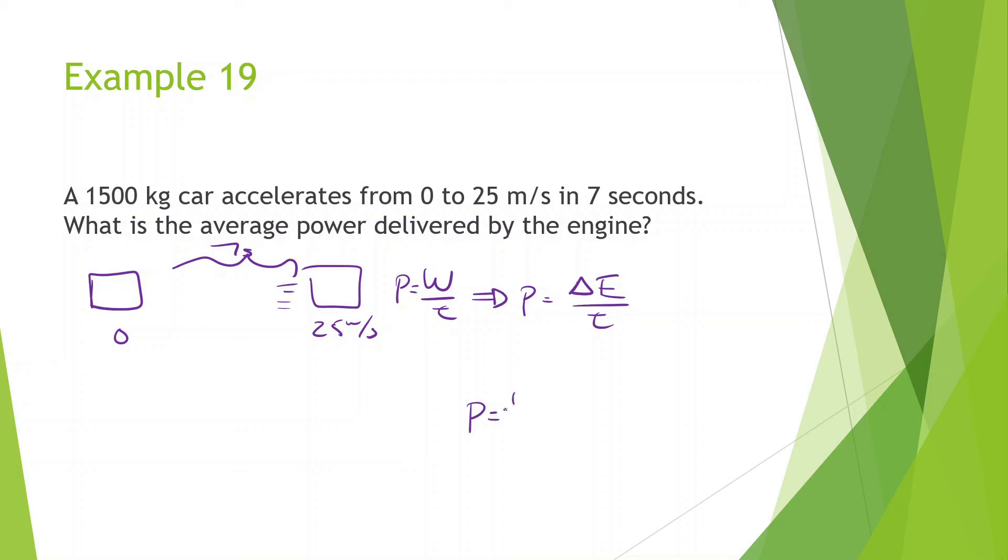So we're going to do 1 half mv final squared minus 1 half mv initial squared divided by t. Let me put this over here. Sorry, I'm going all over the place. Power is equal to 1 half mv final squared, which is 25 squared, minus 0, because initial velocity is 0. This is 0.